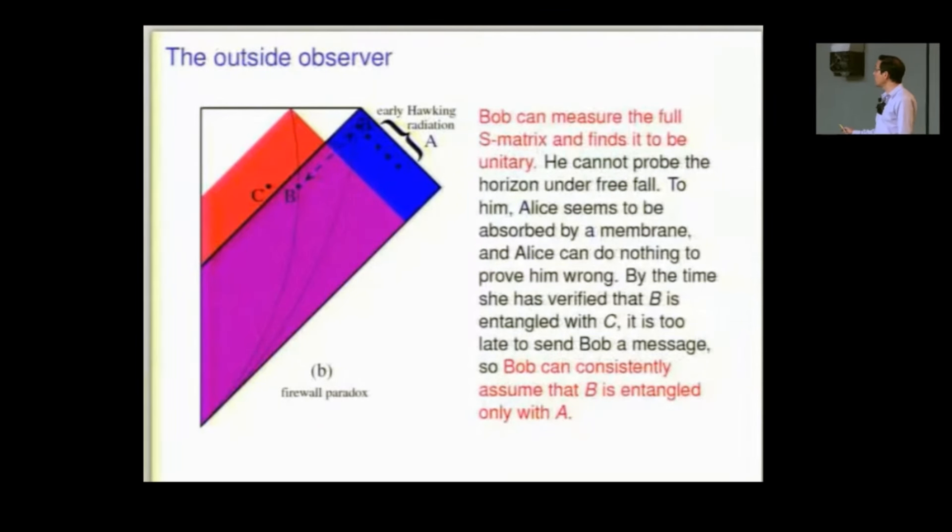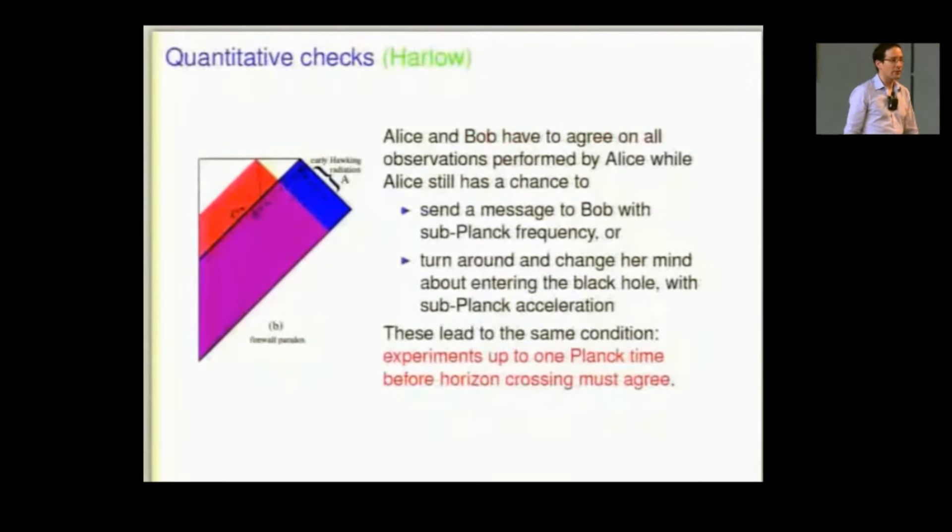Now, Bob has a different story. He can measure the full S matrix. He can't probe the horizon under freefall. He has no reason to insist that B should be entangled with C. And so he can consistently say that there's no contradiction. He measures the S matrix. It's unitary. B is entangled with A. Everything's fine. Okay, each person sees one entanglement and not the other.